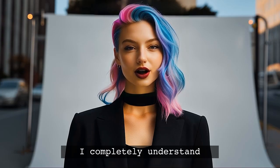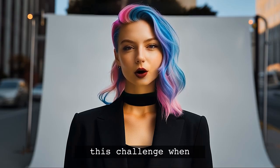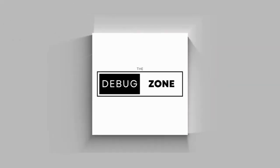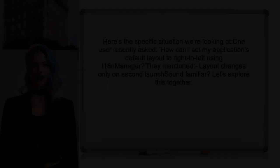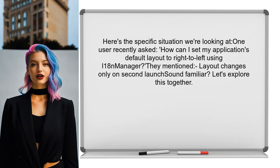Many developers face this challenge when working with applications that need to support right-to-left languages, like Arabic. One user recently asked: how can I set my application's default layout to right-to-left using i18n Manager? They mentioned that while they found some methods, the layout only changes on the second app launch. Sound familiar?